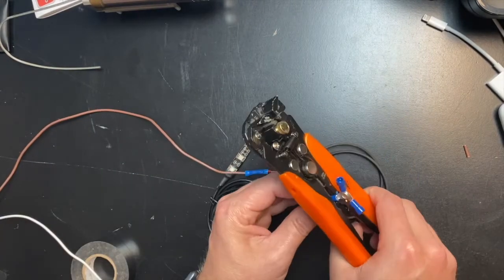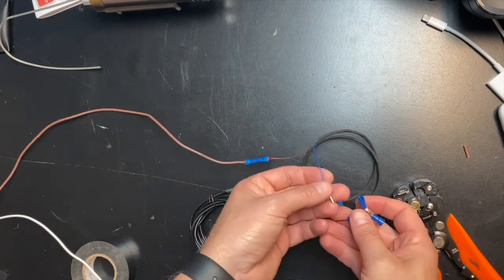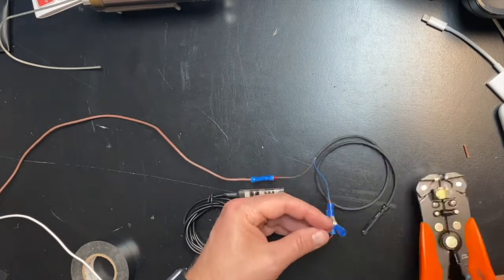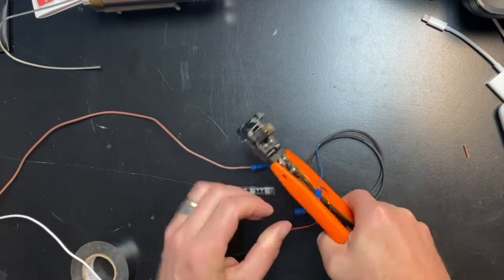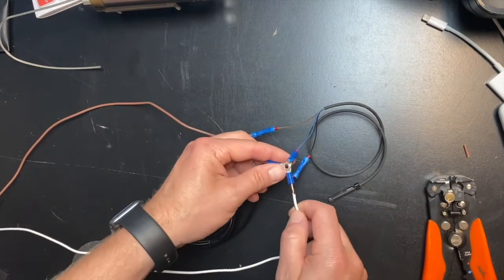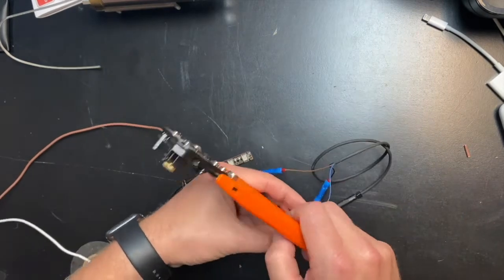Locate the three-way butt connector provided in the kit and connect the black wire from the LED light, the blue wire from the reed switch, and on the last post of the three-way connector we will run an extra wire that we will ground to the vehicle.